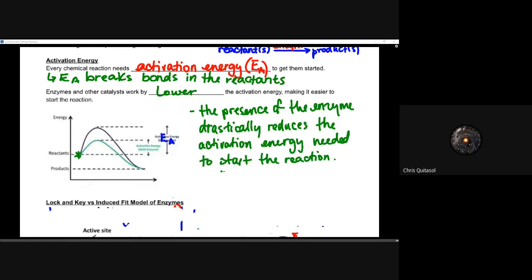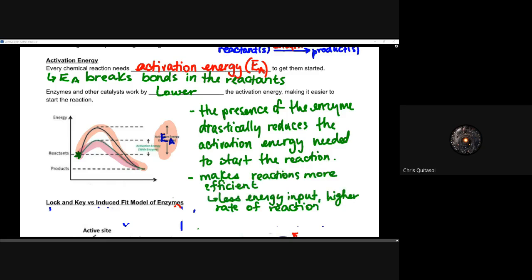Looking at this chart with activation energy on the y-axis: without an enzyme the required energy is high, but with an enzyme there is a huge drop in the amount of energy required. This makes reactions more efficient — less energy input is needed, there is a higher rate of reaction, and it helps save energy overall.